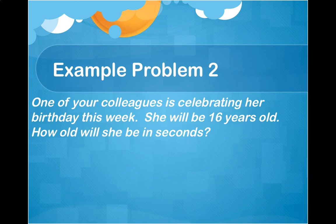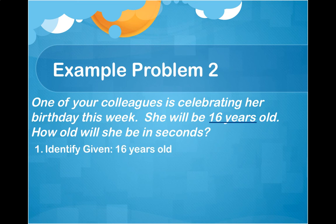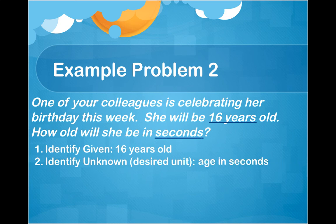One of your colleagues is celebrating her birthday this week — she will be 16 years old. How old will she be in seconds? First, identify what we're given: she is 16 years old. Second, identify the desired unit: we're looking for age in seconds. Third, determine our conversion factors. We have to go from years to seconds, and unfortunately there's not one conversion factor that takes us straight there — we'll need to go from years to days, days to hours, hours to minutes, and minutes to seconds.